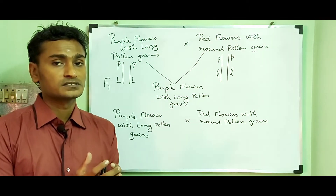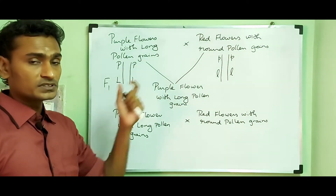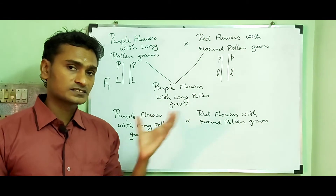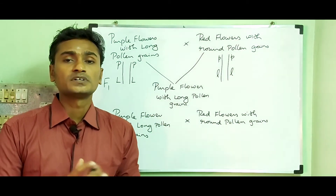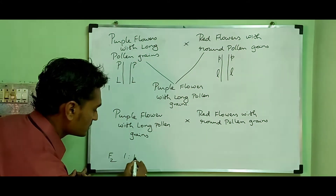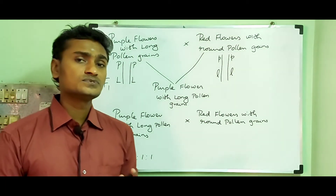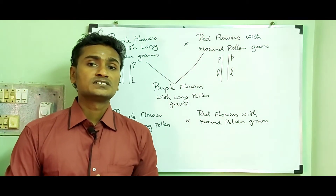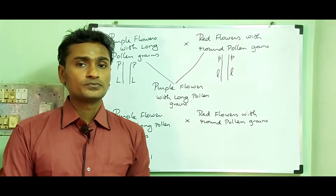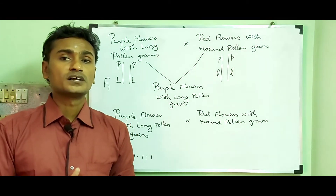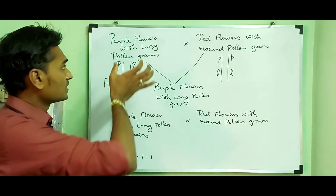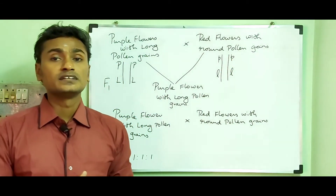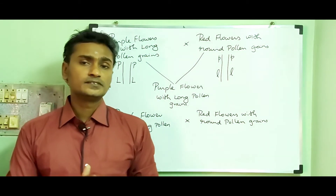This was a dihybrid test cross involving two traits: flower color and pollen length. However, in the F2 generation, the observed ratio was different from the expected 1:1:1:1 ratio. The F2 individuals exhibited more parental phenotypes — purple flower with long pollen grain, and red flower with round pollen grain.